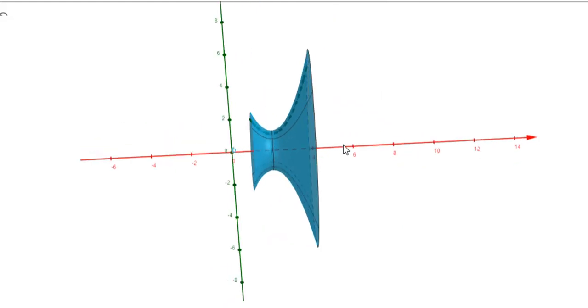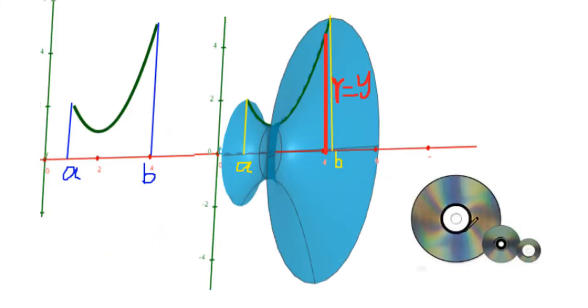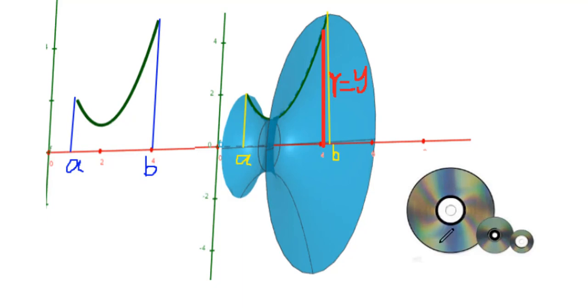We will use the method called disk method to figure this out. You can think about you have millions of different kinds of disks like this, then try to fill in this solid. We know one disk is very thin. Think about there is a disk with radius like this, the red one.